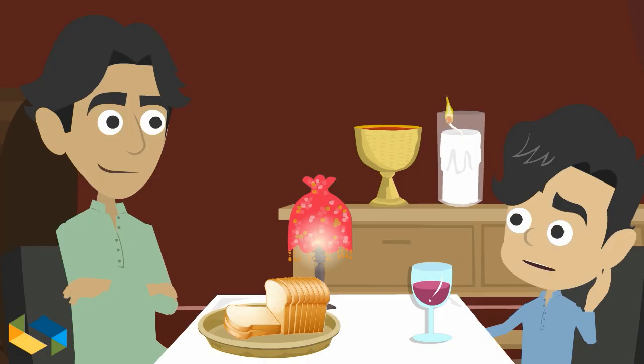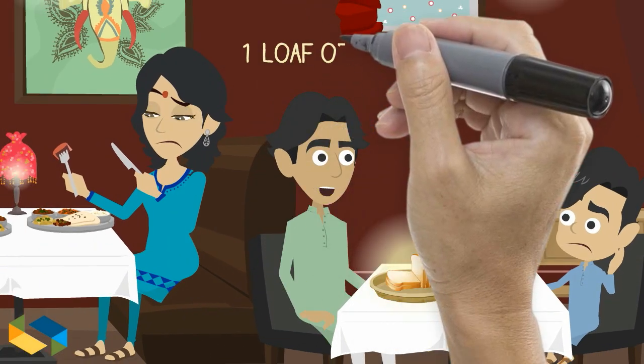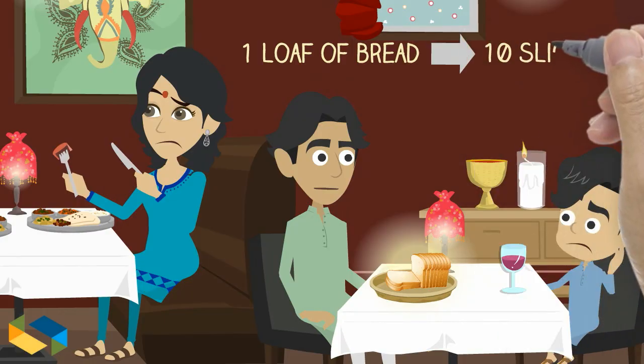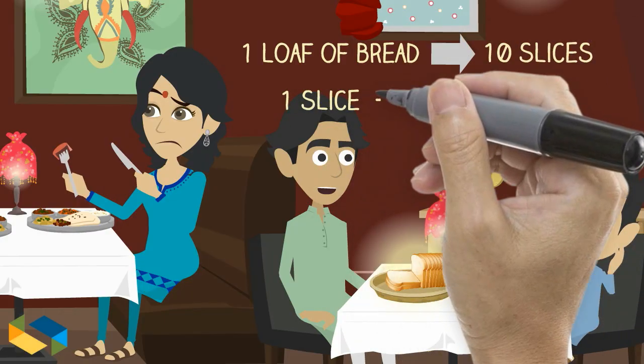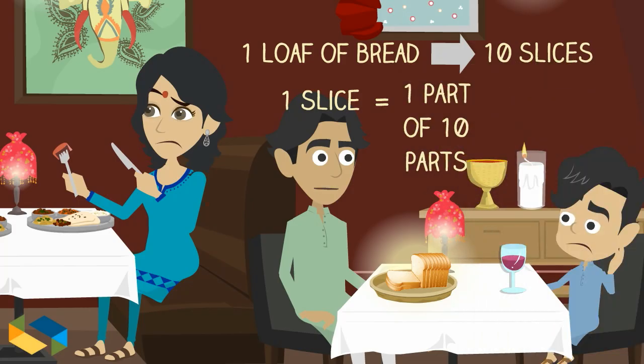But what can be less than 1 dad? Take this bread for example. It was earlier one whole loaf of wheat bread before we made 10 slices of it. So one of these slices here is nothing but one part out of 10 parts of the loaf. In other words, a tenth of the bread, written as 1 upon 10, simple.